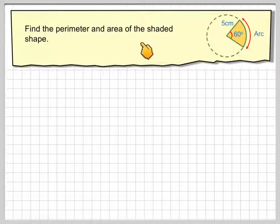Find the perimeter and the area of the shaded shape. So what we've got to do in the first case is find the perimeter. We're going to find this arc length and then add to it this length plus this length, which is the radii of the circle.